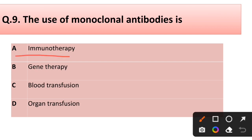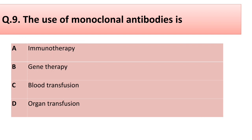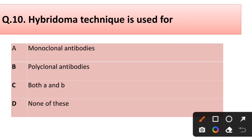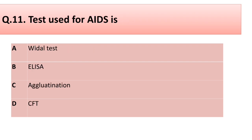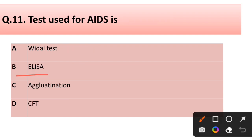Question number nine: The use of monoclonal antibody is — immunotherapy, gene therapy, blood transfusion, or organ transfusion? Correct answer is option A: immunotherapy. Question number ten: Hybridoma technique is used for — monoclonal antibodies, polyclonal antibodies, both A and B, or none of these? Correct answer is option A: monoclonal antibodies. Question number eleven: The test used for AIDS is — Widal test, ELISA, agglutination, or CFT? Correct answer is option B: ELISA.